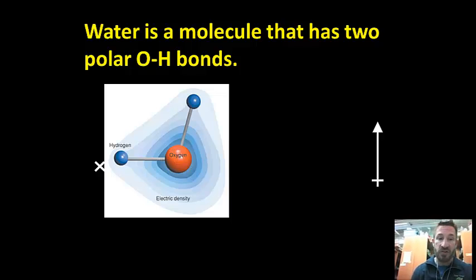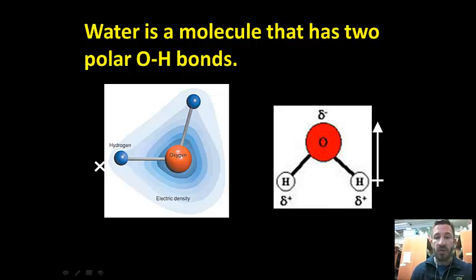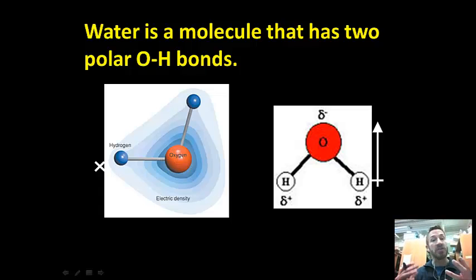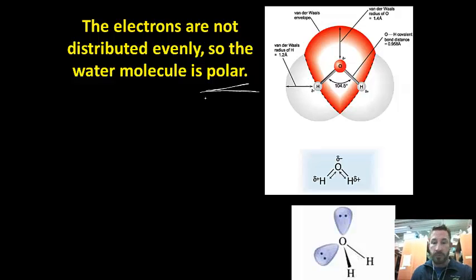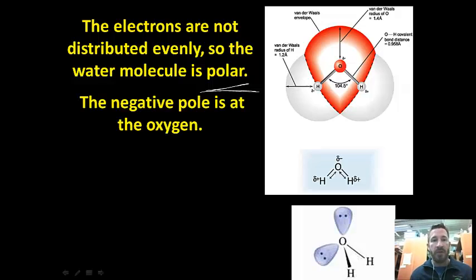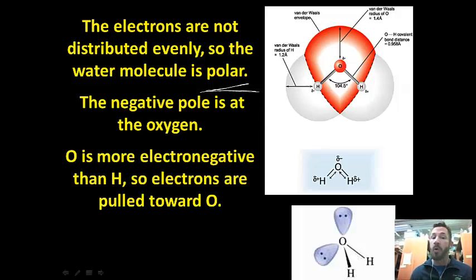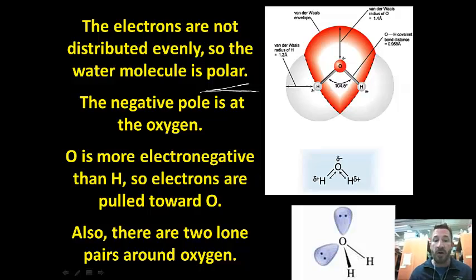Water has two polar O-H bonds. The hydrogens are more positive and the oxygen is more negative, so the entire molecule is more positive toward the hydrogen side and more negative toward the oxygen side. There's a greater electron density of those valence electrons next to the oxygen, so electrons are not distributed evenly in water — the water molecule is polar. The oxygen is more electronegative than hydrogen, pulling the electrons toward it, and there are also two lone pairs of electrons on oxygen.